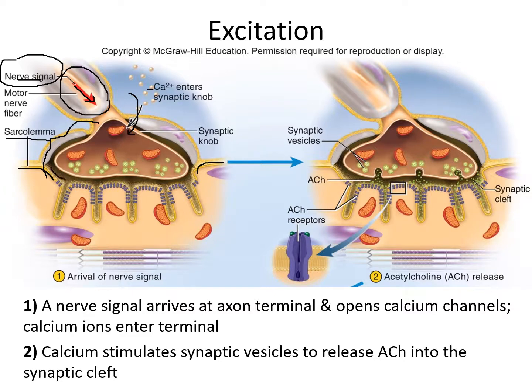The synaptic cleft is the microscopic gap between the axon terminal and the sarcolemma. These are infoldings of the sarcolemma, and these blue cylinders are specialized proteins — acetylcholine receptors built into the sarcolemma — so that the sarcolemma can respond to acetylcholine, with its effects felt within the muscle fiber itself.